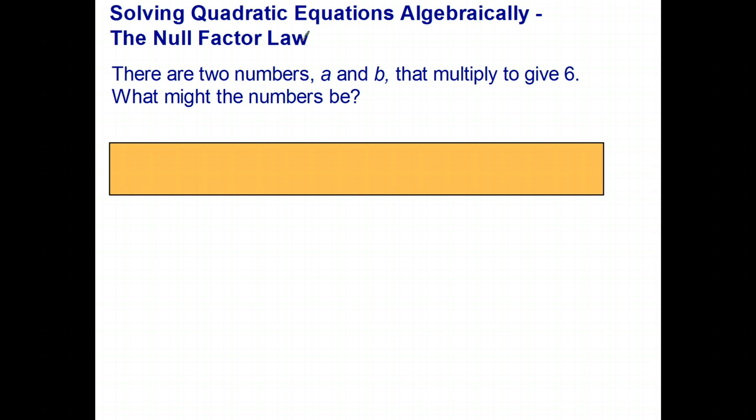So to start, just have a look at this question here. There are two numbers a and b that multiply to give six. What might the numbers be? Well, if you had a bit of a class discussion about that, you could say one times six, two times three, but of course we're not confined to whole numbers. You could have some negative numbers, like negative one times negative six.